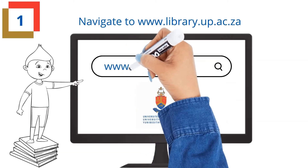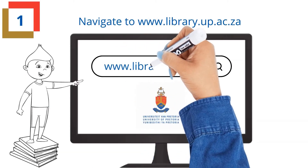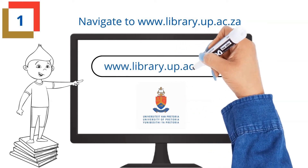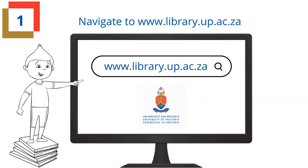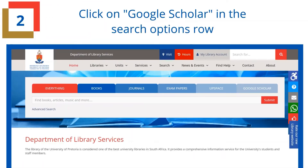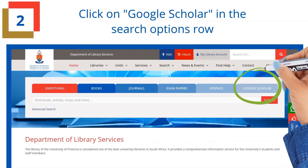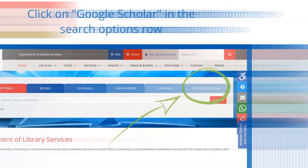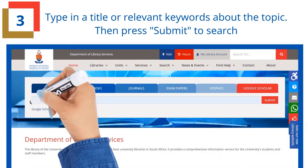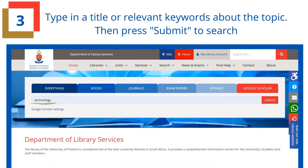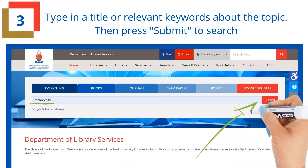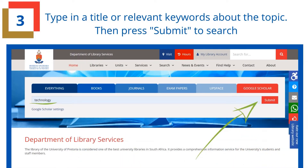Navigate to www.library.up.ac.za. Click on Google Scholar in the search options row. Type in a title or relevant keywords about the topic, then press submit to search.